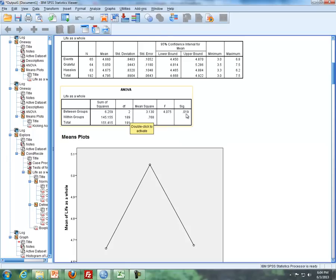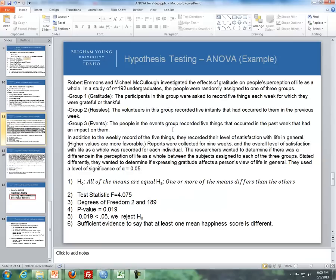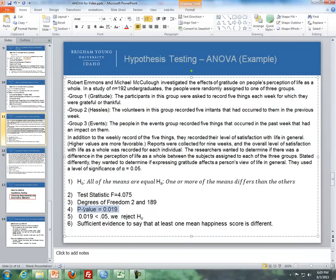And then my p-value is this number right here, 0.019. Since our p-value is less than our level of significance, we would reject the null hypothesis. So therefore we have sufficient evidence to say that at least one of the main happiness scores is different across the groups.